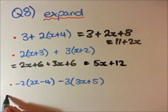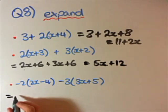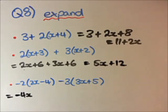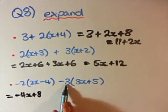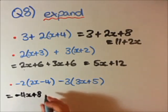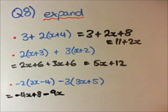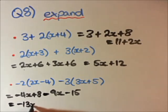And the last one, we can go minus 2 times 2x, which is minus 4x. Minus 2 times minus 4 is positive 8, so plus 8. We have minus 3 times 3x, so that's going to be minus 9x. And we have minus 3 times 5, which is going to be minus 15. We can find an easy way to write this final equation. Minus 4x minus 9x is minus 13x. And if we have positive 8 minus 15, that'll be minus 7.